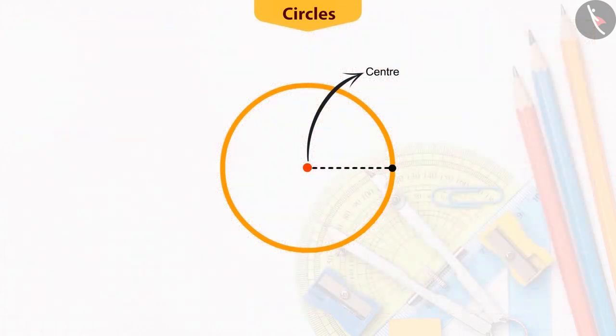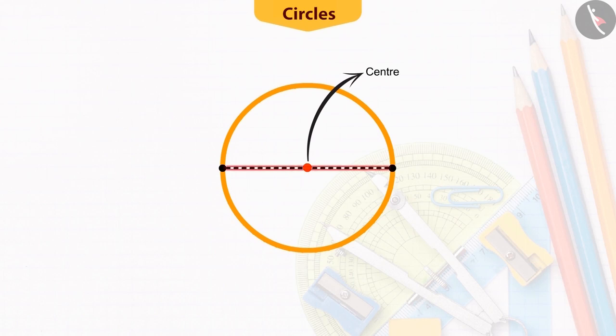If we increase the length of this radius to the left, then we get a line which intersects the circle at two points and passes through the center. Such a line in a circle is called the diameter of the circle.